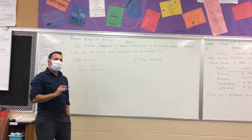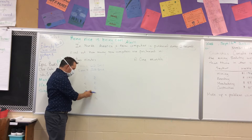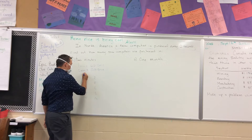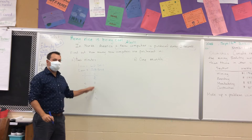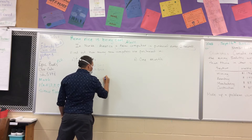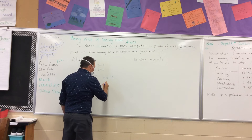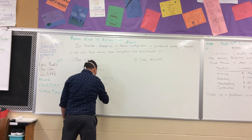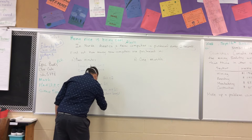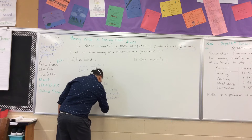What do we notice? One computer in two seconds, two in four, three in six, four in eight, five in ten. The number of computers bought is half the number of seconds. So 120 seconds divided by two equals 60. We know that there are 60 computers bought in two minutes in North America.